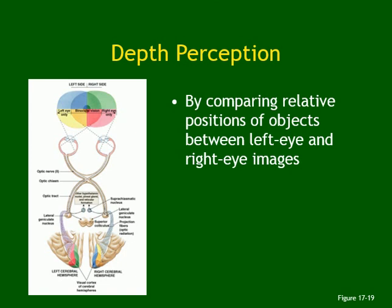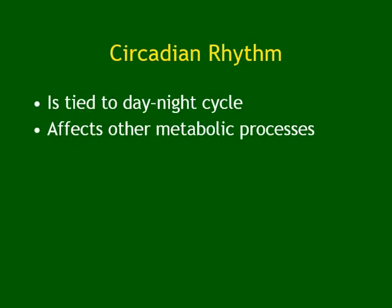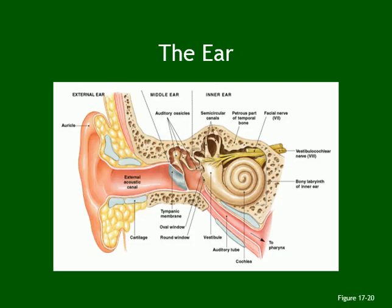Depth perception works by comparing visual positions from the right and left eye. Each eye provides visual information, and comparing the two gives you depth. That is why closing one eye reduces depth perception — you can still see but not as sharply. The circadian rhythm also changes with the day and night cycle.